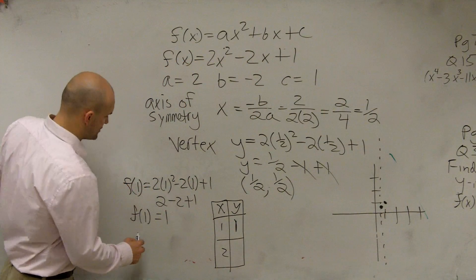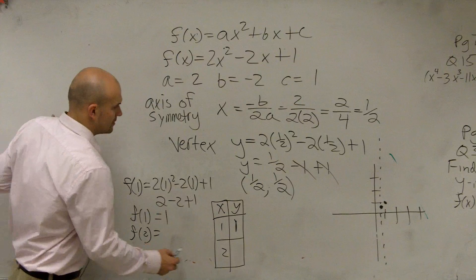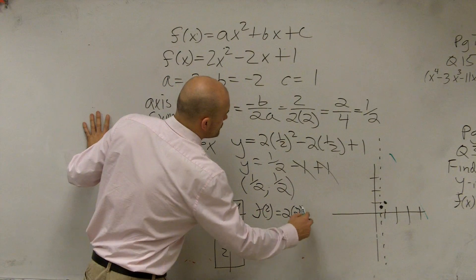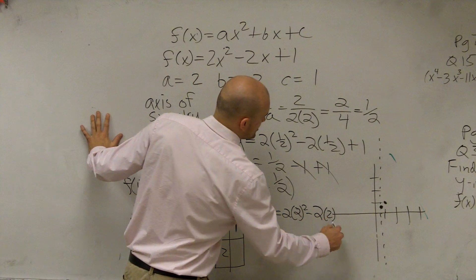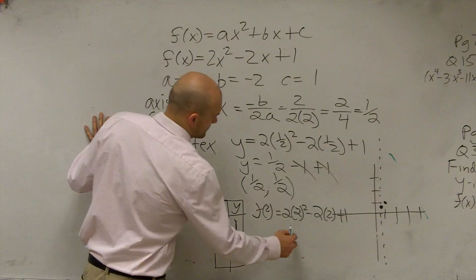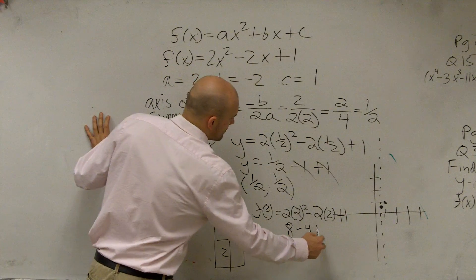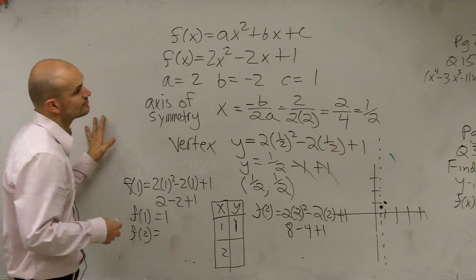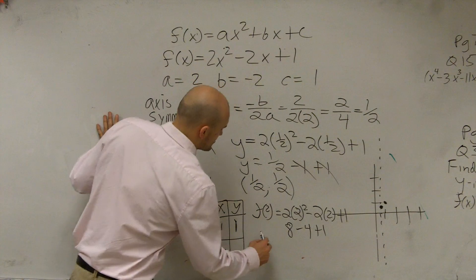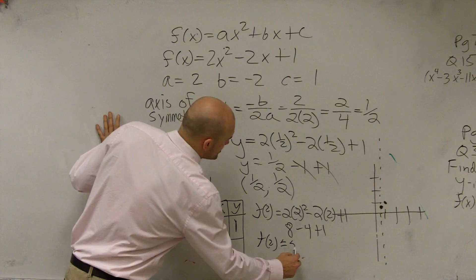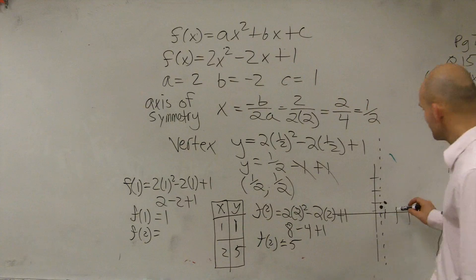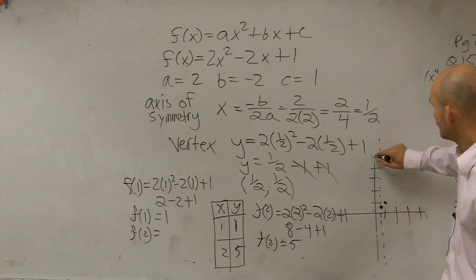Now let's do f of 2. Do f of 2 here. f of 2 equals 2 times 2 squared minus 2 times 2 plus 1. 2 squared is 4. 4 times 2 is 8 minus 4 plus 1. So that's going to be 4 plus 1 is 5. So we say f of 2 is equal to 5. So now I go over 2, over 2, and up 5. 1, 2, 3, 4, 5.